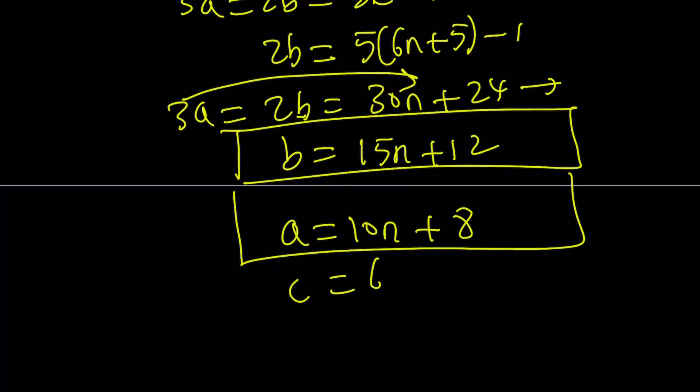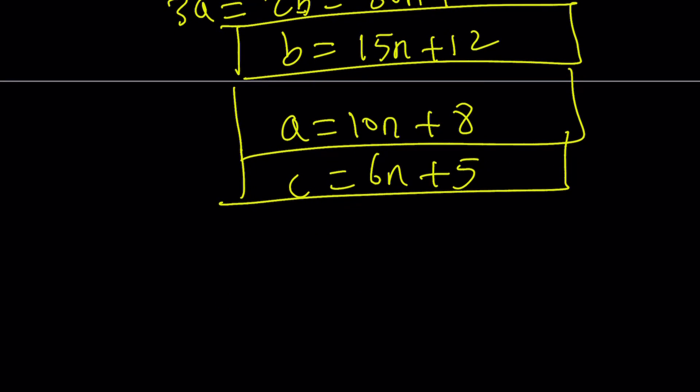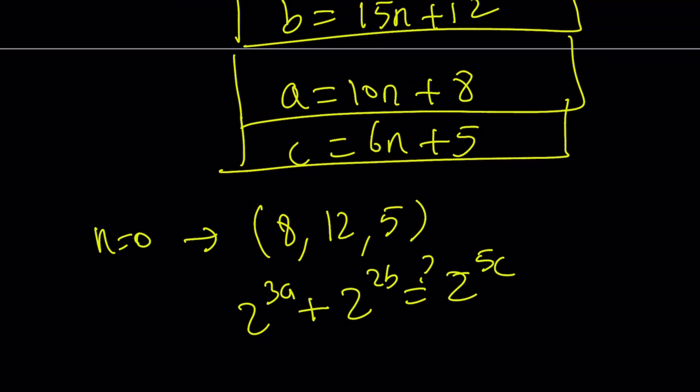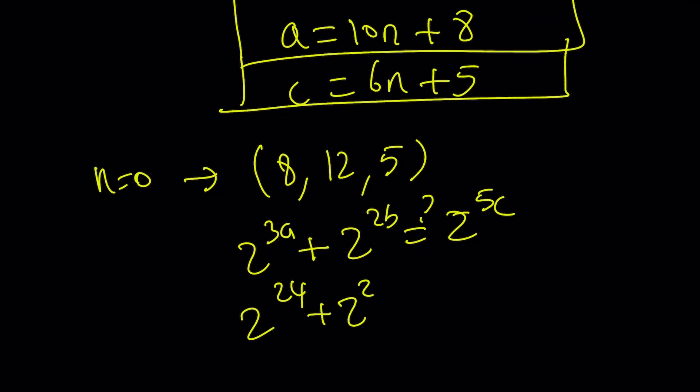Let's go ahead and put it all together. a equals 10n plus 8, b equals 15n plus 12, c equals 6n plus 5. And that's basically going to give you all the solutions. As you change n over the set of integers, you're going to get infinitely many solutions to this equation. Let's just find one and test it. For example, if n is equal to 0, then from here you get a equals 8, b equals 12, and c equals 5. And is it true that 2 to the power 3a plus 2 to the power 2b equals 2 to the power 5c? Let's see. 2 to the power 24 plus 2 to the power 24 equals 2 to the power 25. And yes, that's true for c equals 5. So 8 comma 12 comma 5 is a possible solution to this equation.